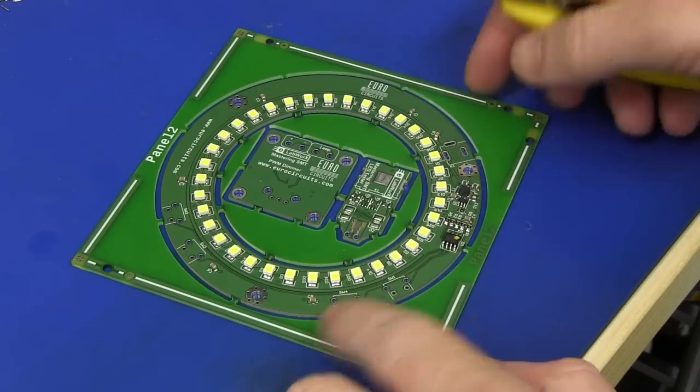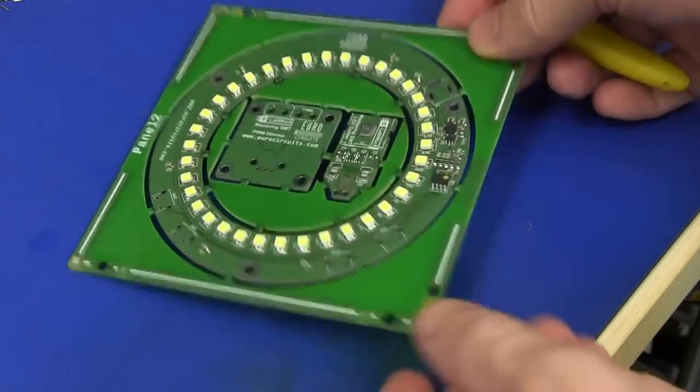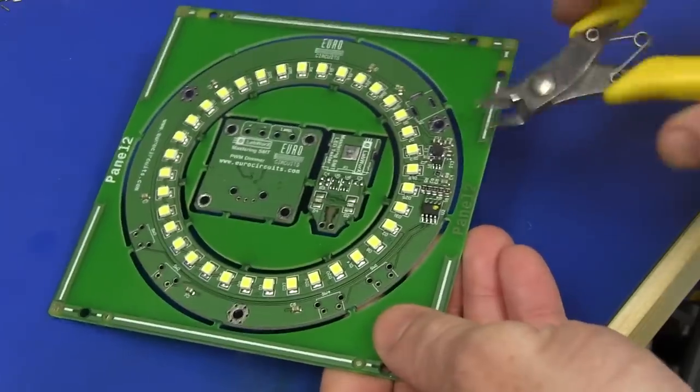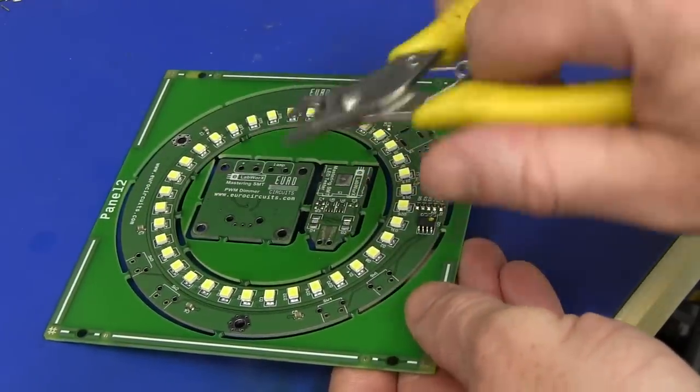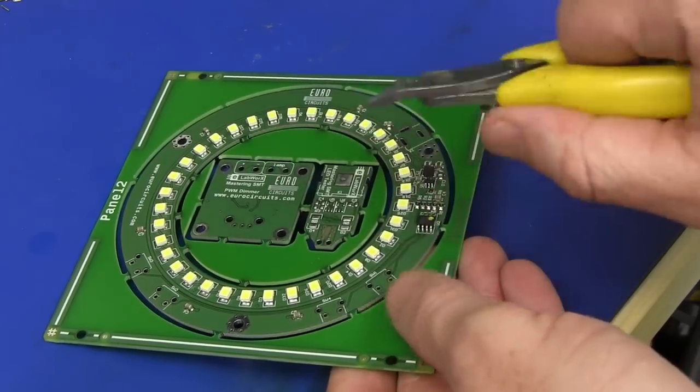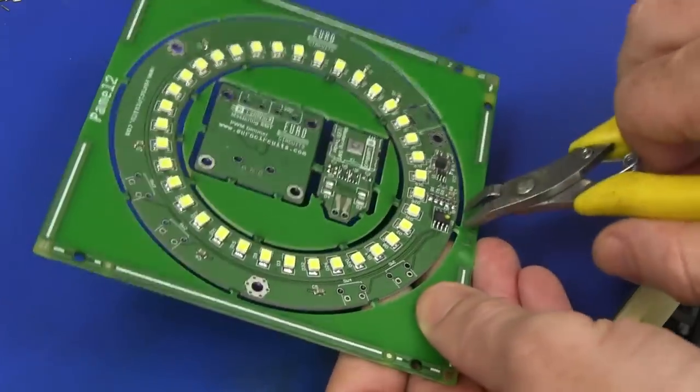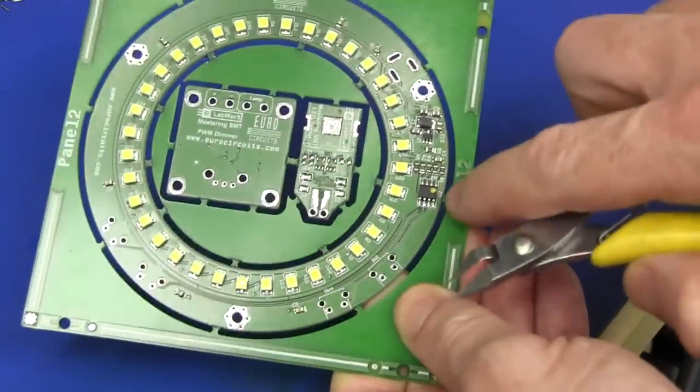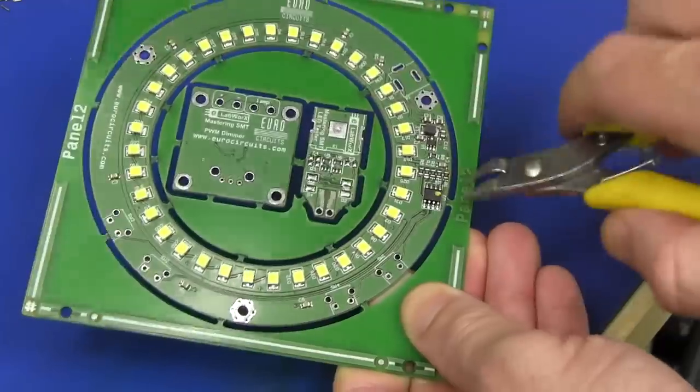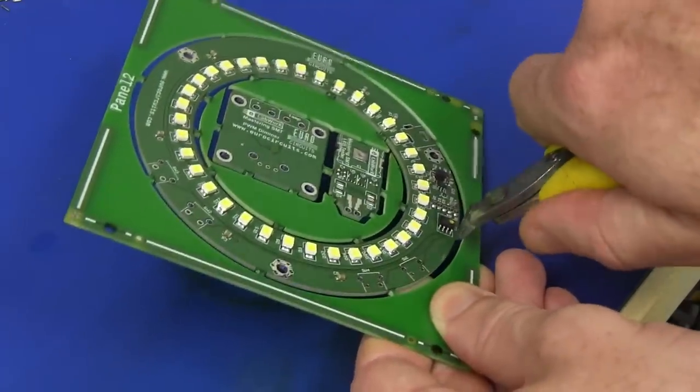Now, before I hand-solder a couple of components left, we'll just cut this out of the panel here. Your crap pair of side cutters. Have a good pair for good work and a crap pair for something like this. And get in there, the flat side, if it's a round board like that, you want the flat side of your side cutters in there, and bang.